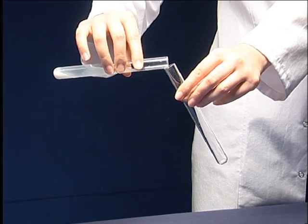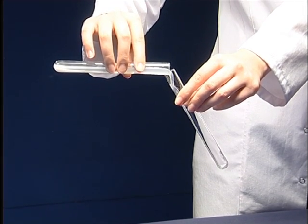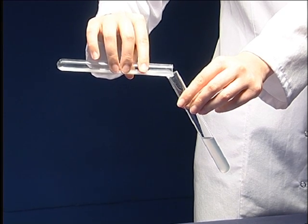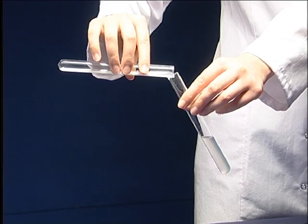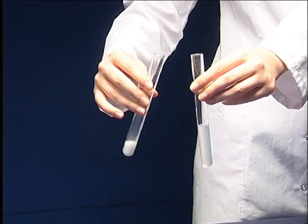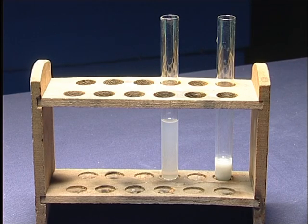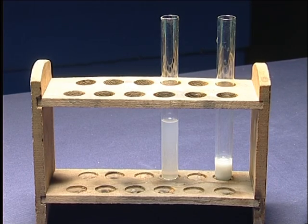After all solid barium sulfate has settled down, pour off only the liquid part into another tube. Separation of a solid and liquid by pouring off the liquid is called decantation.